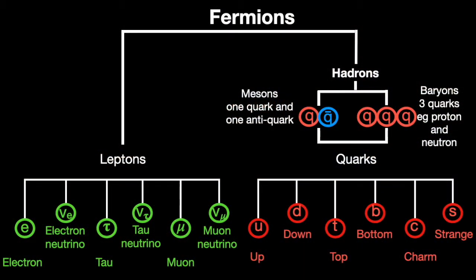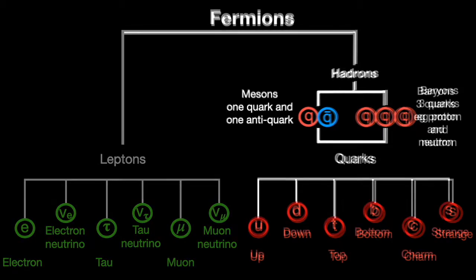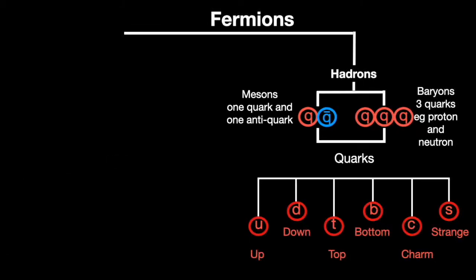Fermions are the particles that make up the universe. At the base of this are two groups which are leptons and quarks. Within this group of particles we're especially looking at hadrons which are made up from quarks.